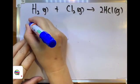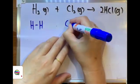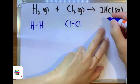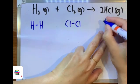So for hydrogen gas, we will have H single bond H. Chlorine gas: Cl single bond Cl. And for hydrogen chloride gas: H single bond Cl, times 2.